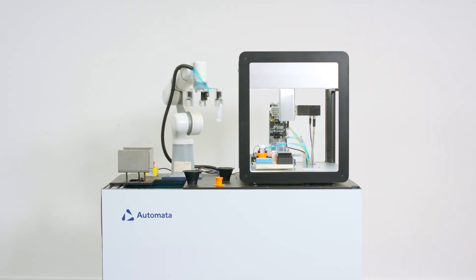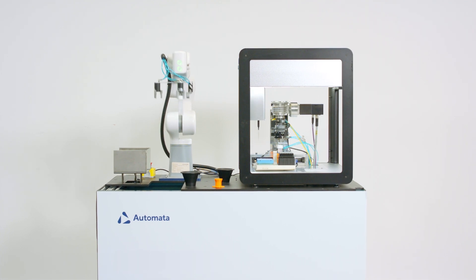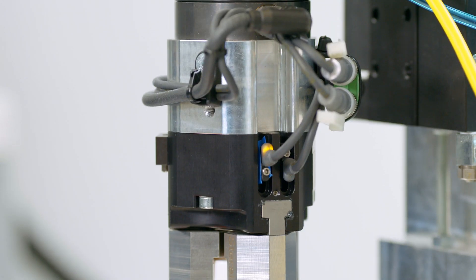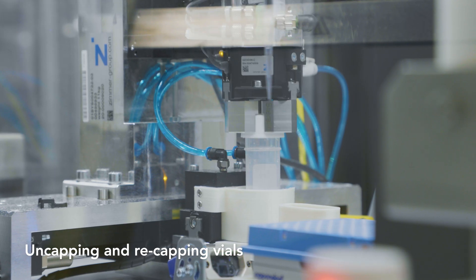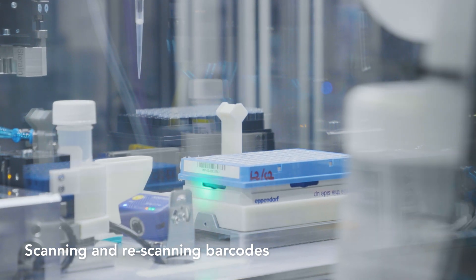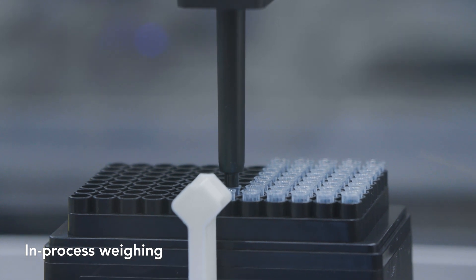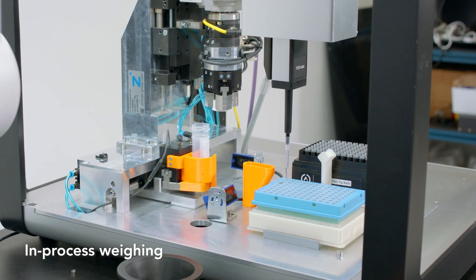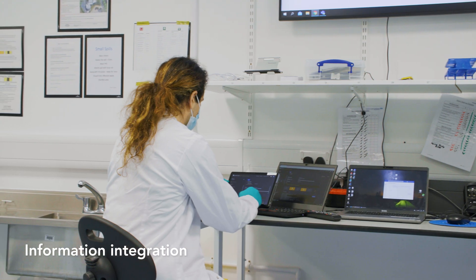Some of the things that Automata can automate are uncapping and recapping of vials, scanning and rescanning of barcodes, in-process weighing, and the information integration for the LIMS systems.